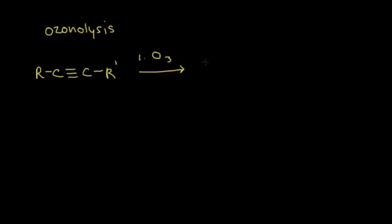There's a very detailed mechanism for the ozonolysis of alkenes — you can go back and watch that video. For this video, we're not going to go through the mechanism; we're just going to look at the products. We add ozone in the first step, and in the second step we add water. This cleaves your triple bond and gives you carboxylic acids as your product — two of them.